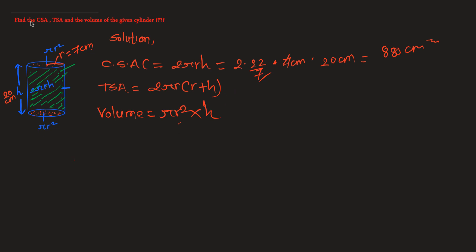Similarly, in order to find the total surface area, we have to include the two circles, which gives us 2πr² plus the curved surface area 2πrh. So our formula becomes 2πr(r + h).